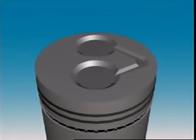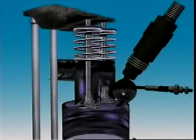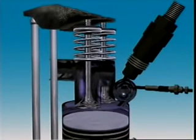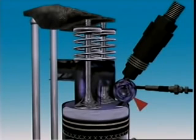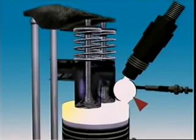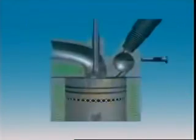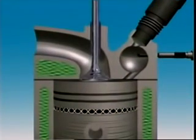In indirect injection, the piston is fairly flat or has a shallow cavity. The main combustion chamber is between the cylinder head and the top of the piston, but a smaller separate chamber is in the head. Fuel is injected into this smaller chamber, which can have various designs. This is a swirl chamber — it's spherical and connected to the main chamber by an angled passage.